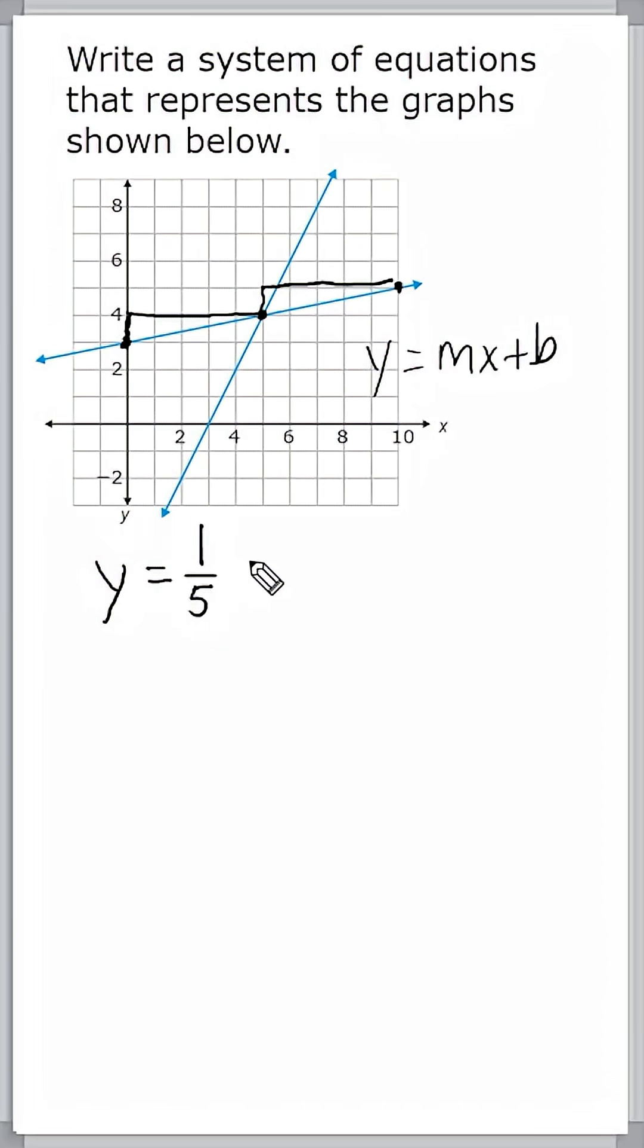So we have y equals 1 fifth x, and our b value is where our line crosses the y axis, which is at positive 3. So we just write plus 3 at the end right here.